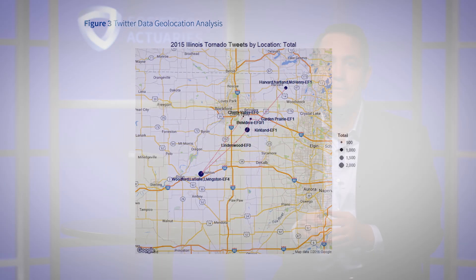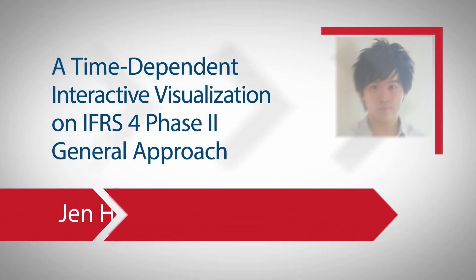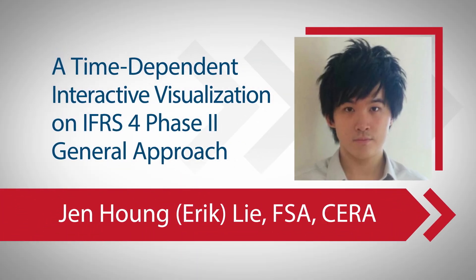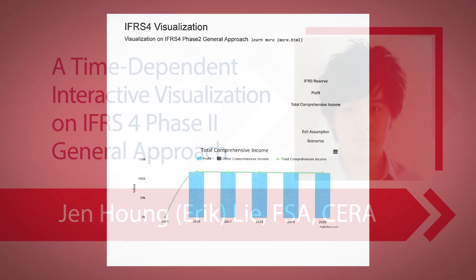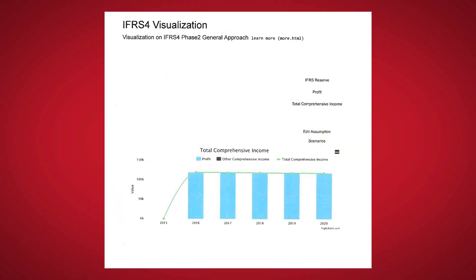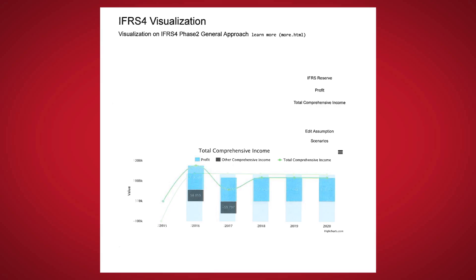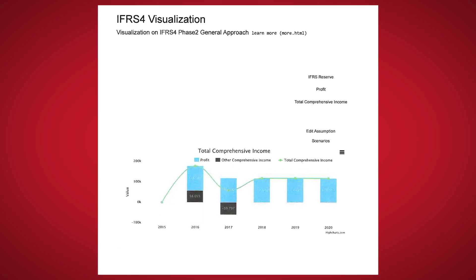Another key takeaway from this paper is to make sure data visualization tells a particular story with the data that is easy to understand. The article from Eric Lee covers how actuaries can apply data visualization with predictive underwriting, asset allocation, and stochastic modeling by adjusting charts interactively.